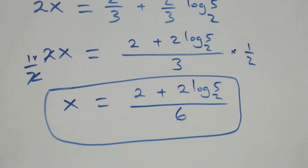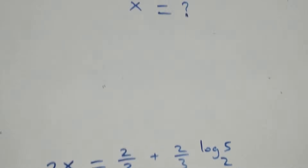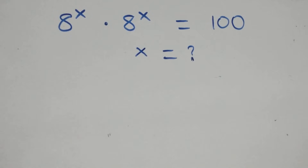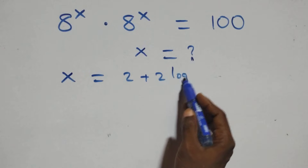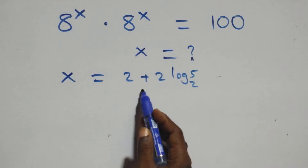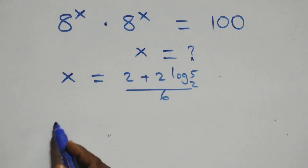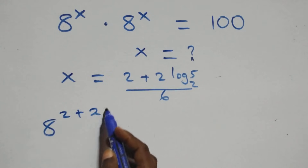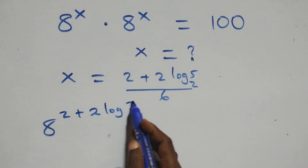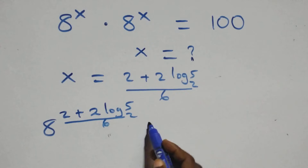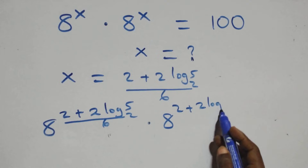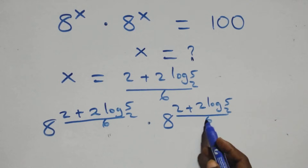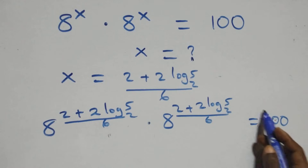Now let's substitute to check if this satisfies the original problem. We substitute x equals (2 plus 2 log 5 base 2) all over 6. What we have becomes 8 raised to the power (2 plus 2 log 5 base 2)/6, times 8 raised to the same power, and this should equal 100.